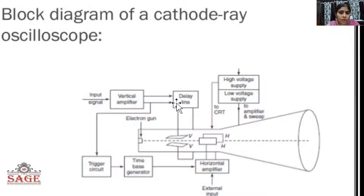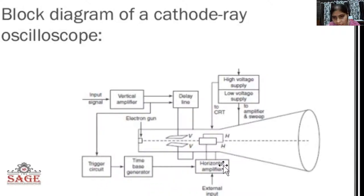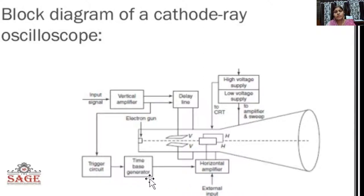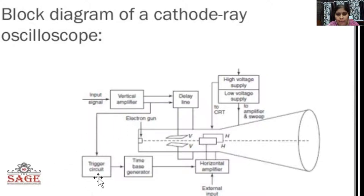The high voltage supply is given to the CRT — to the cathode — and a low voltage supply is given to the vertical amplifier, trigger circuit, time-based generator, and horizontal amplifier. The low voltage supply is approximately 10 to 15 volts, given to these amplifiers and the time-based generator, where transistors are connected. Transistors can work on 10 to 15 volts.